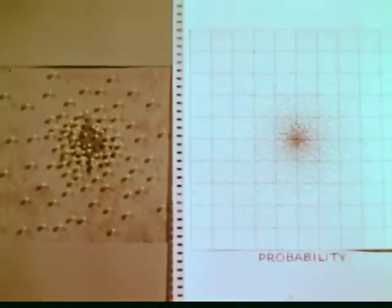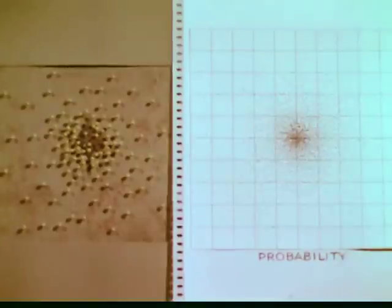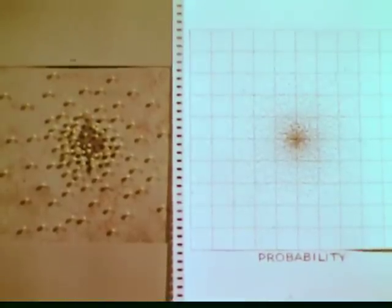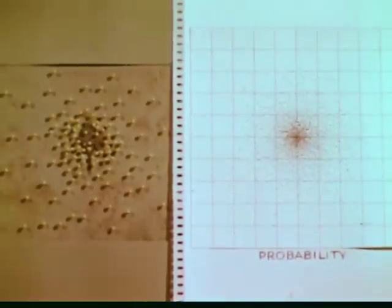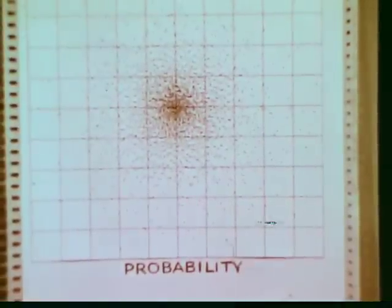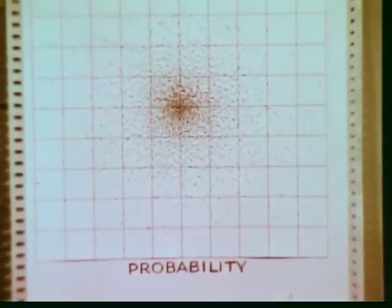The plot of the hydrogen atom, which the computer drew earlier, has exactly the same meaning. Just as this map tells us the probability of finding the hummingbird a given distance from his nest, so this plot tells us the probability of finding the electron a given distance from the proton.